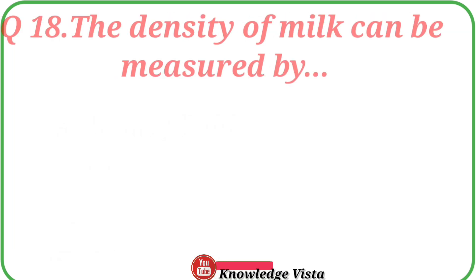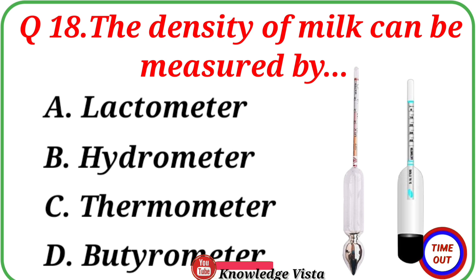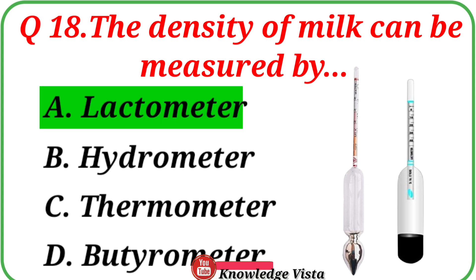Question number eighteen: The density of milk can be measured by? Option A: Lactimeter, B: Hydrometer, C: Thermometer, D: Butyrometer. Correct answer is option A: Lactimeter.